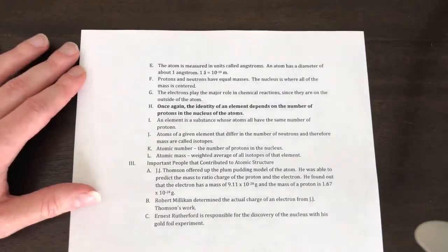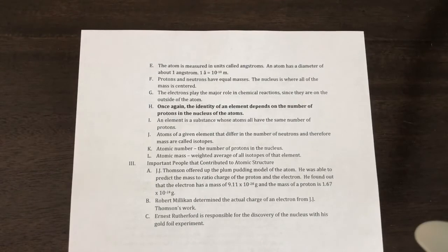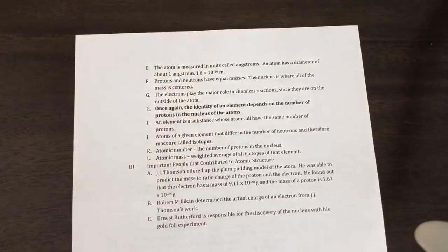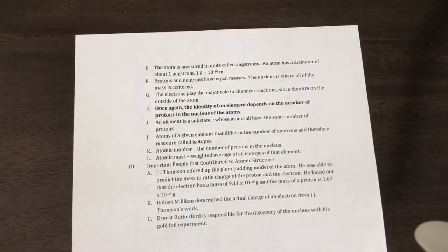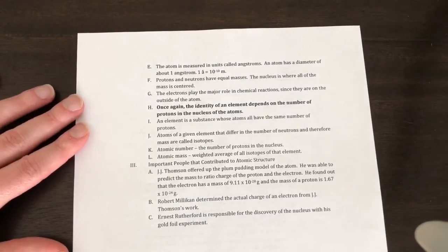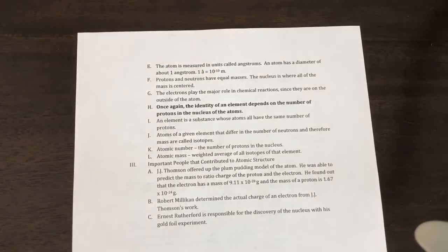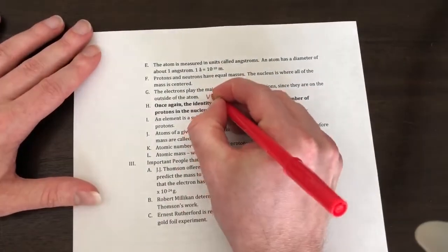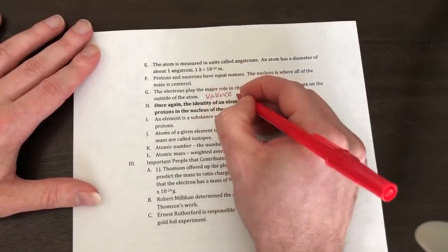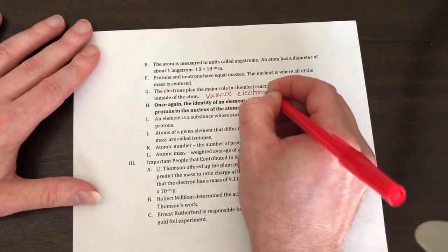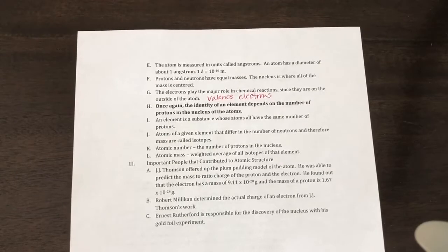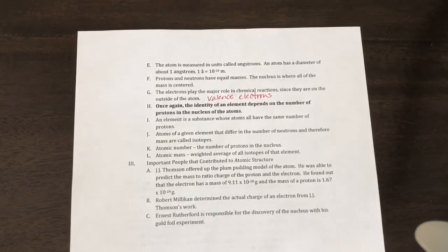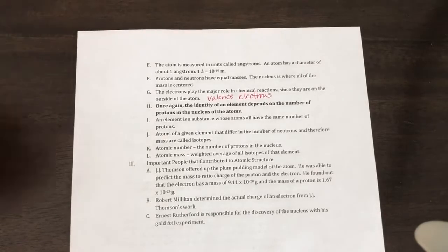On to our next page. The atom is measured in units called angstroms, given by this symbol. It's like a billionth of a meter, so it's extremely small. Protons and neutrons have equal masses. We already said that the nucleus is where all of the mass is centered. The electrons play the major role in chemical reactions since they're on the outside of the atom. Those are called the valence electrons that are going to take part in the bonding. We've already talked about valence electrons because those are the ones that surround the outermost shell.